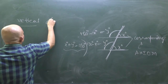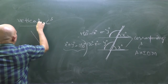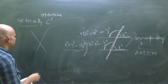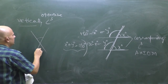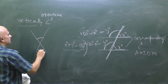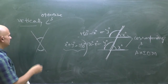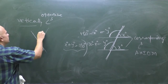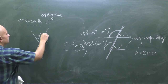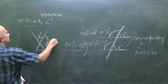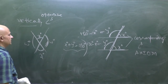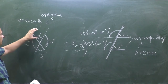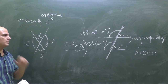Now let's come to another kind of angle: vertically opposite angles. If two lines intersect each other, this angle and that angle are equal. If this is z degrees, then that is also z degrees. If this is w degrees, then that is also w degrees. These are called vertically opposite angles.